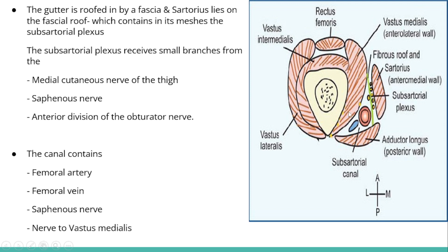What are the contents of this canal? It contains the femoral artery, femoral vein, the saphenous nerve, and the nerve to vastus medialis. The nerve to vastus medialis can be seen in the upper part of the canal.